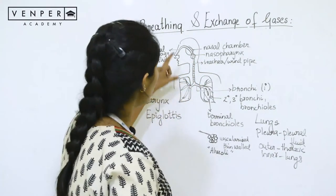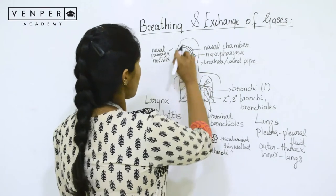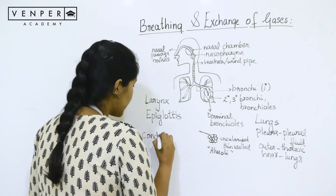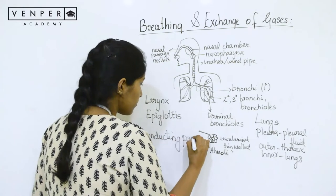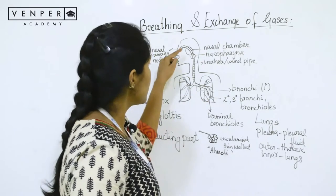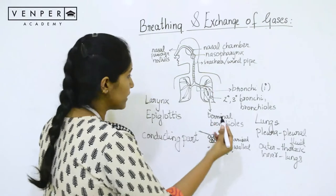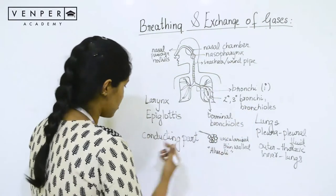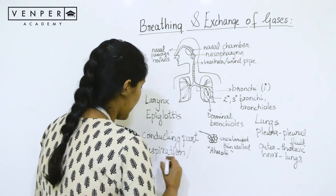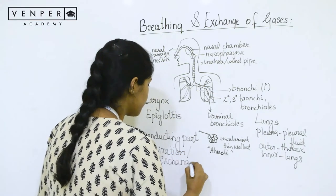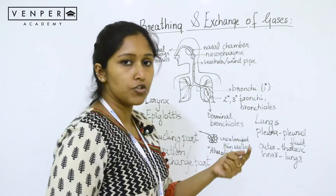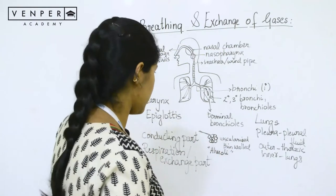The overall structure from the nostrils to the terminal bronchioles is called the conducting part, because it brings air from the atmosphere into the lungs. The alveoli and their ducts together are called the respiration or exchange part, because it is at the alveoli that the exchange of oxygen and carbon dioxide actually takes place.